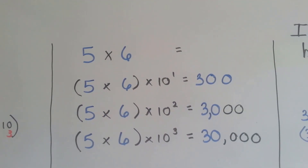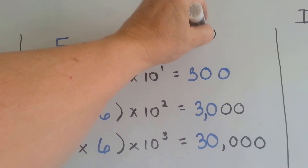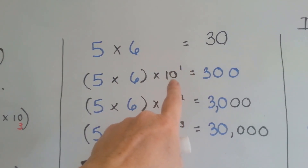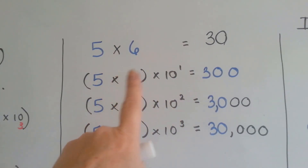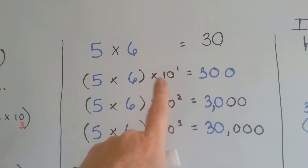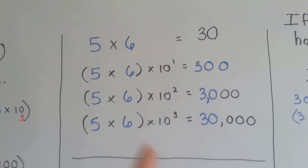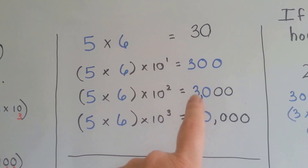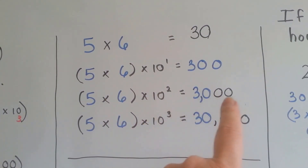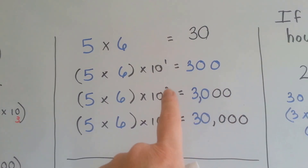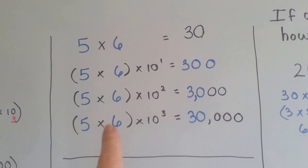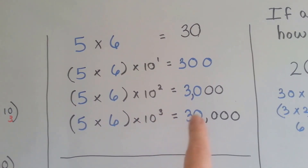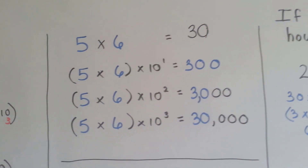Look at this one. We've got 5 times 6, which is 30. 5 times 6 times 10 to the first — and we know 10 to the first is just 10 — so that means 30 times 10, which is 300. 5 times 6 times 10 to the second power: the 10 has 2 zeros, so that's the second power, giving us 3,000. 5 times 6 times 10 to the third power would be 30 with 3 zeros: 30,000.